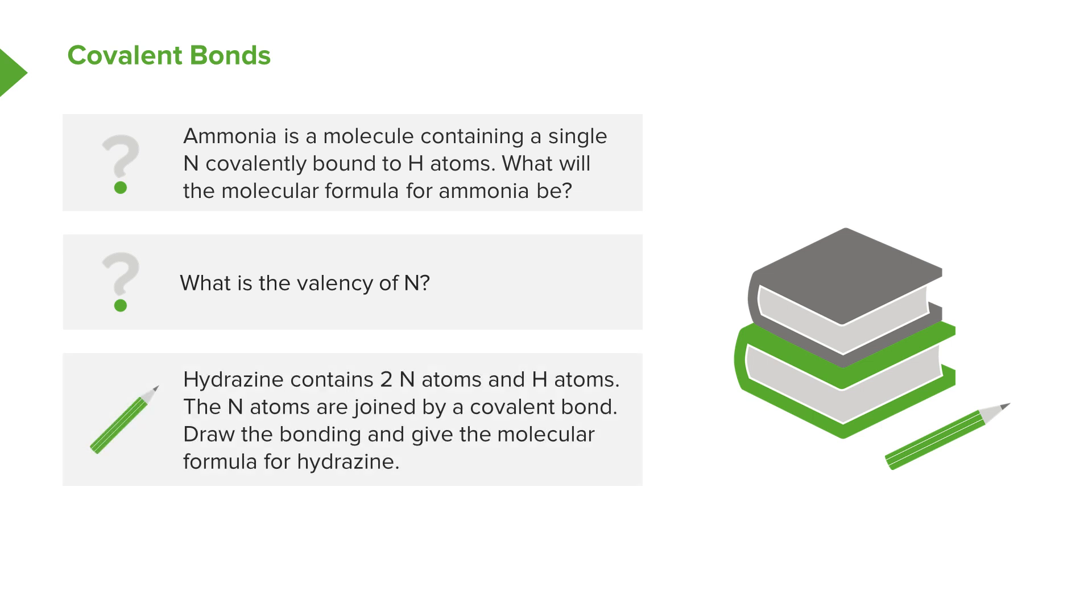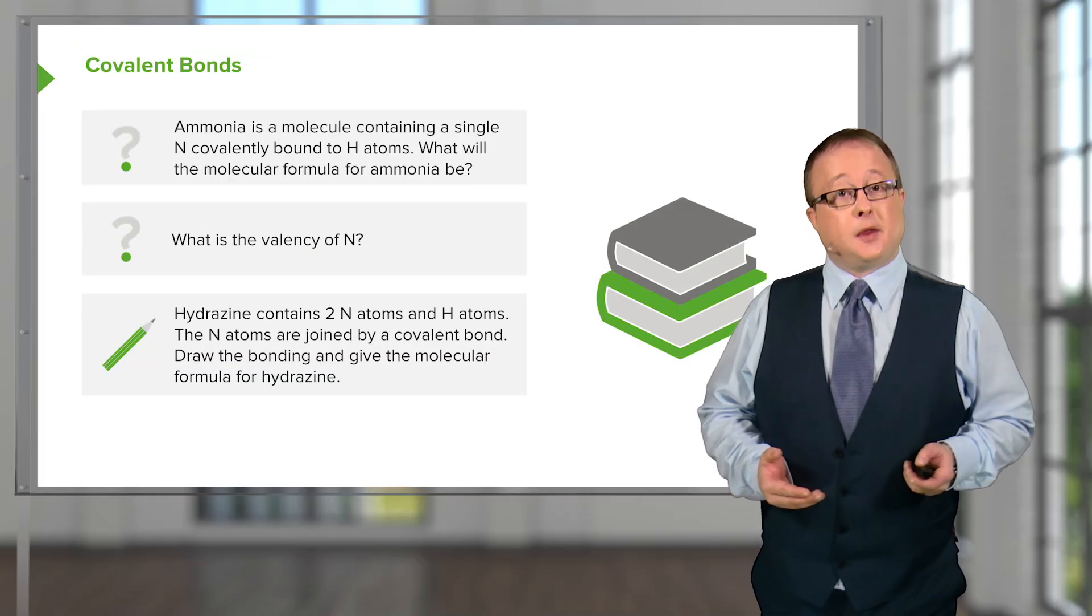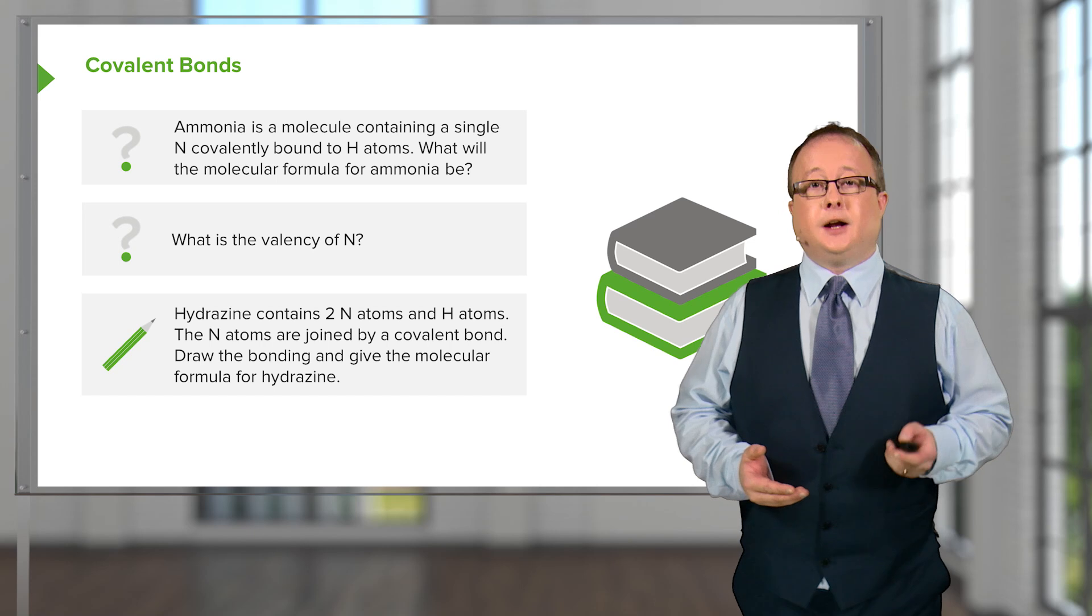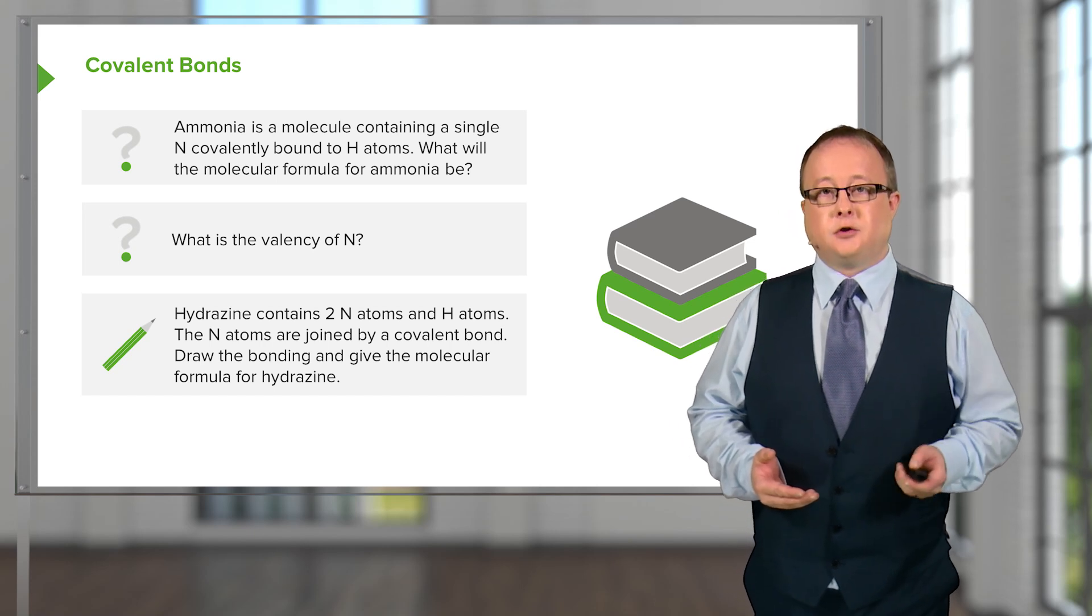And a follow-up, hydrazine, which is a related molecule, contains two nitrogen atoms and hydrogen atoms. The nitrogen atoms are joined by a covalent bond. What you should do as an exercise is draw the bonding and give the molecular formula for hydrazine.